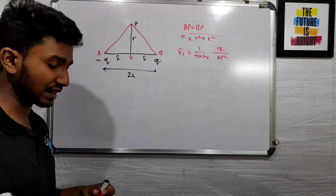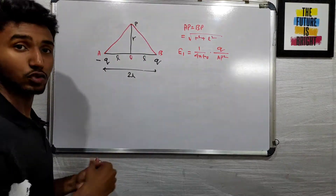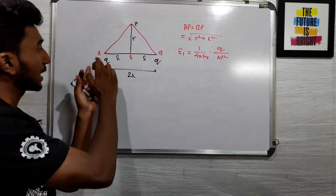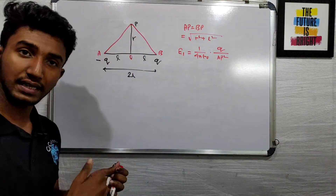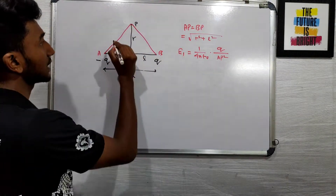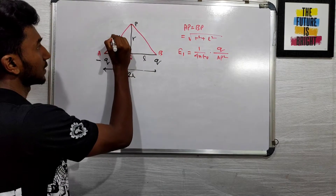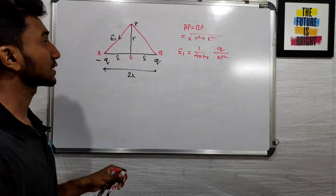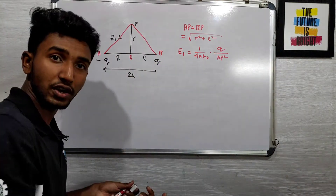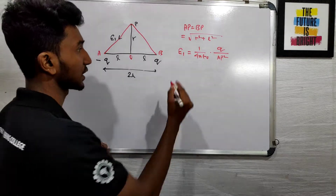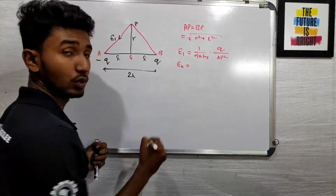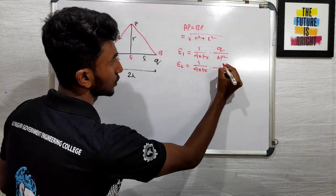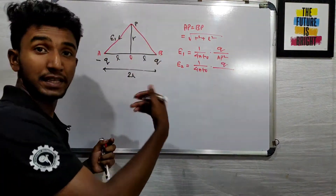What is the direction of E1? We care about the two charges: this is minus Q and plus Q. What is this direction? Next, for plus Q, this is E2. E2 = (1/4πε₀) × q / BP².